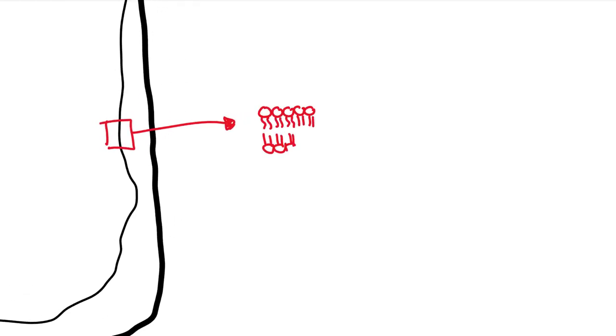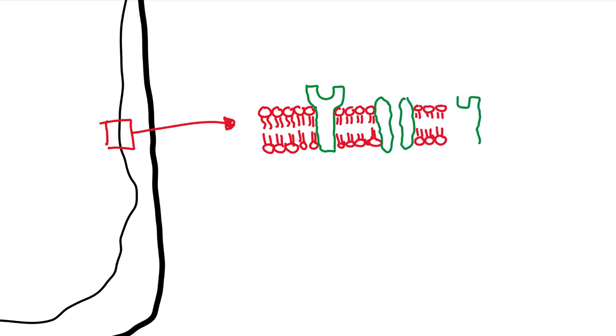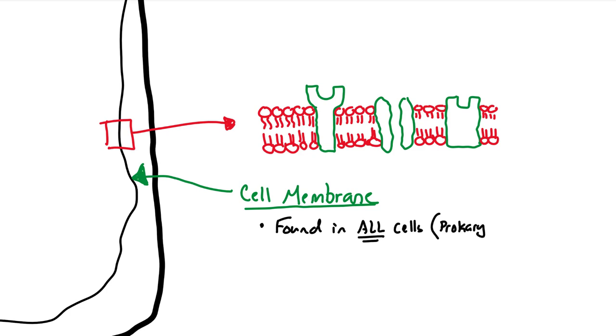The inner thing, the inner barrier, is referred to as the cell membrane. And it's made of these little jellyfish looking things, referred to as phospholipids. You also have these green things in there as well. These are proteins that are sporadic in the cell membrane. The cell membrane is made of phospholipids and is found in all cells, prokaryotes and eukaryotes.